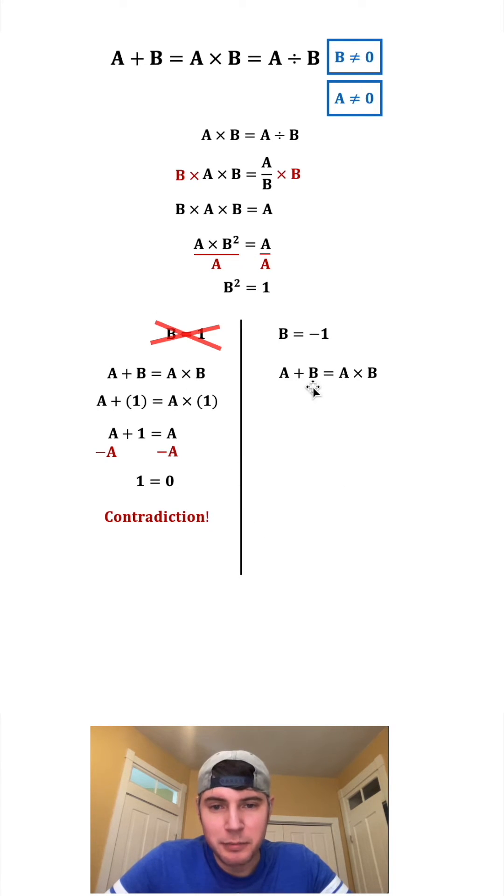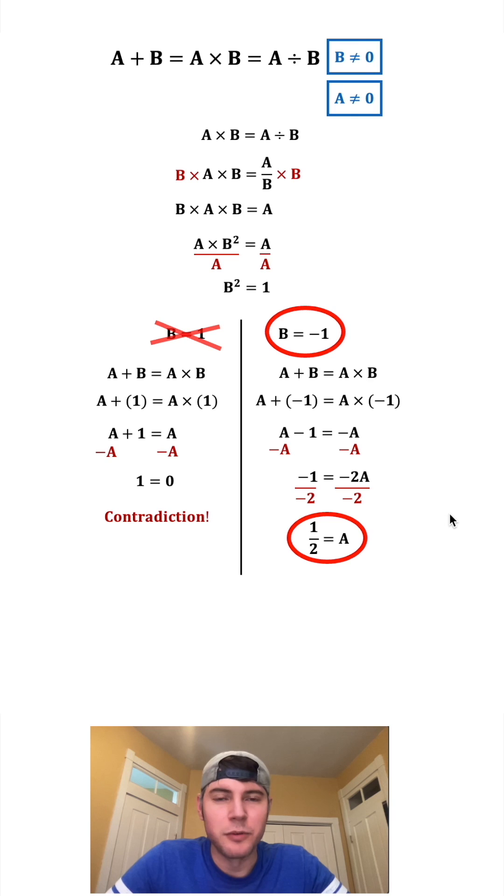Let's see what happens when we plug in B equals negative one. We end up with A minus one is equal to negative A. Now we can subtract A from both sides. We get negative one equals negative two A. Divide both sides by negative two. We get one half is equal to A. And there's no contradiction here. So A equals one half and B equals negative one. This is our solution. How exciting.